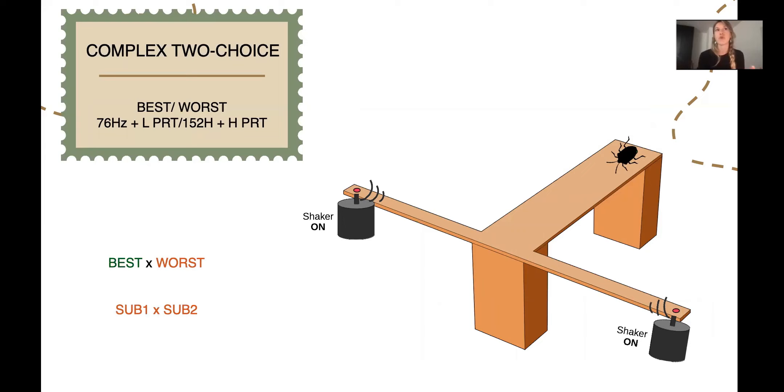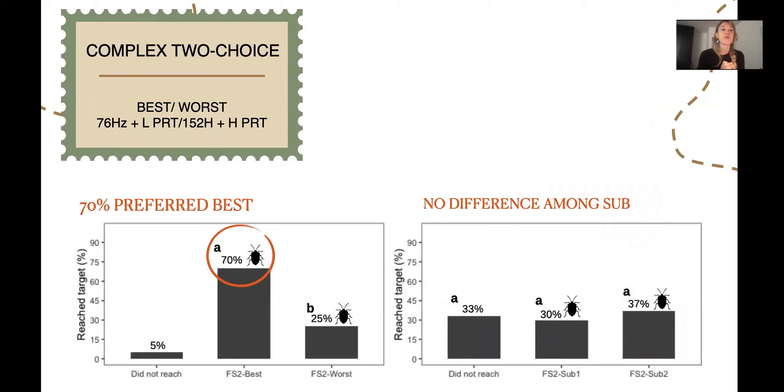When giving them best and worst in the complex two choice, we were of course expecting they would go to the best. However, when exposing them to two different signals with mixed characteristics, we expected that they would not be able to make a choice.